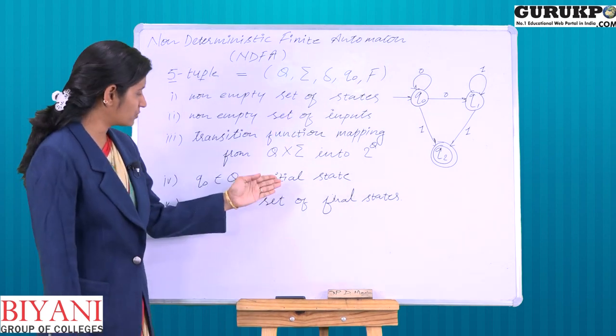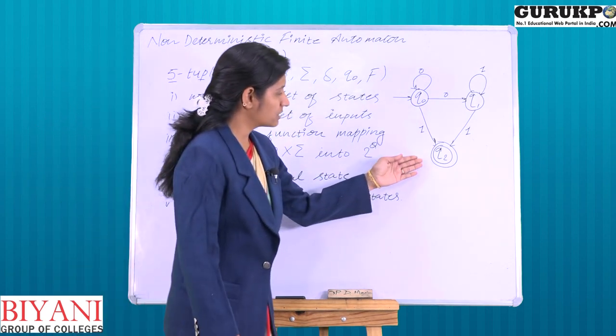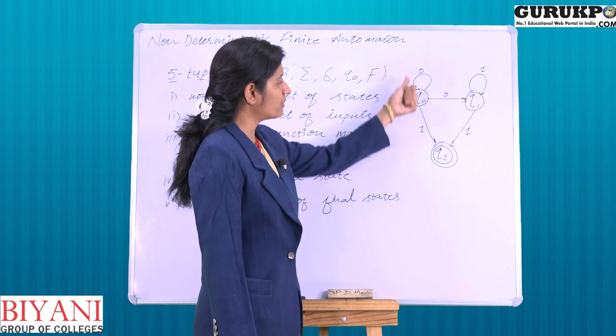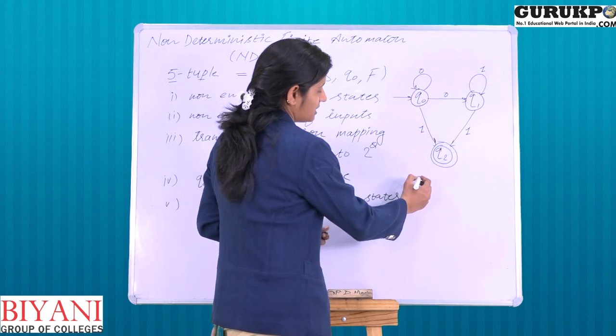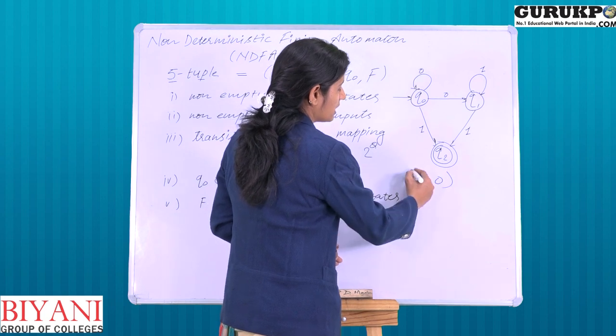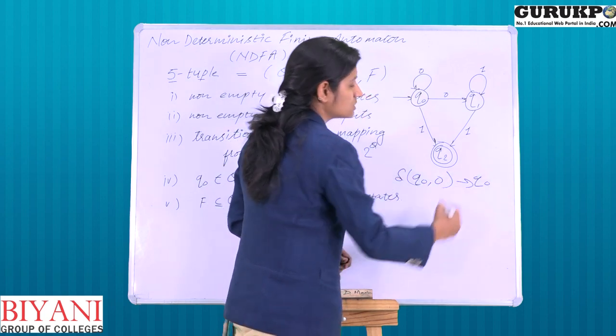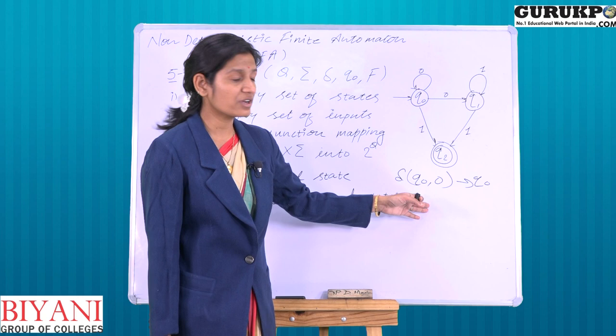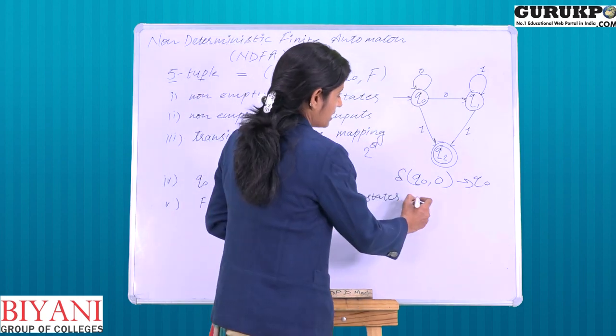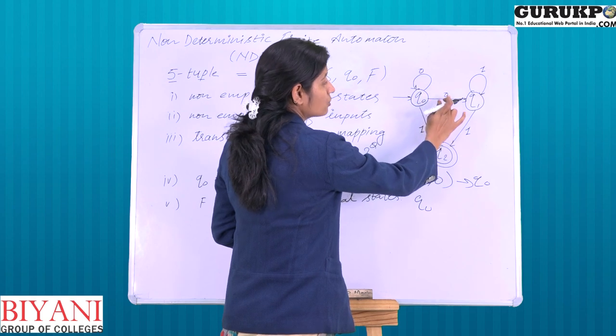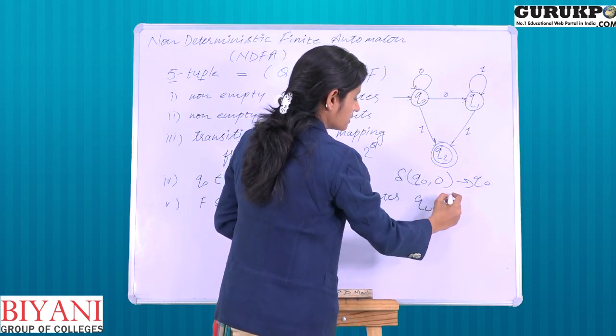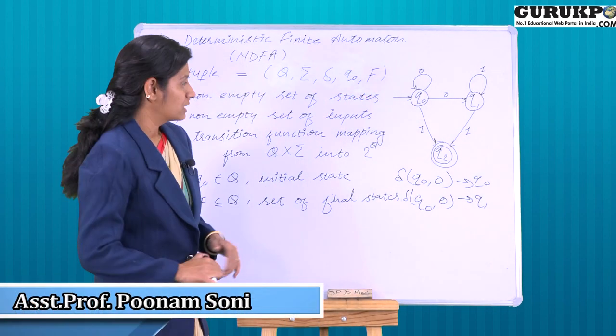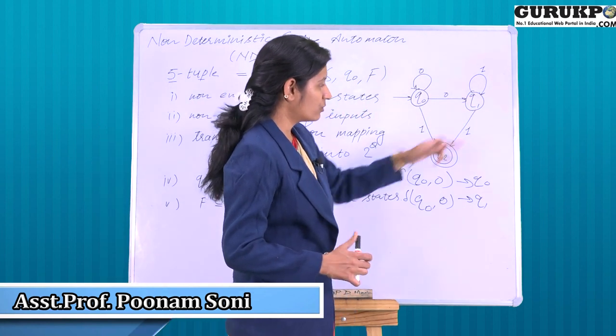So this is the description. And here we will see how we can define finite automata using an example. We can see Q0, when we put 0, we have moved to Q1.